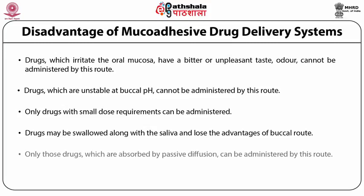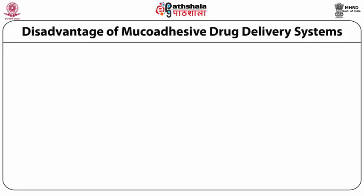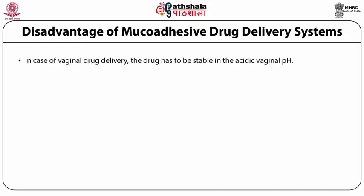Only drugs absorbed by passive diffusion can be administered by the buccal route, and eating and drinking may become restricted. The disadvantages are also linked to the specific site of administration. For vaginal drug delivery, the drug must be stable in the acidic vaginal pH, and a mucoadhesive vaginal formulation could interfere with sexual intercourse.